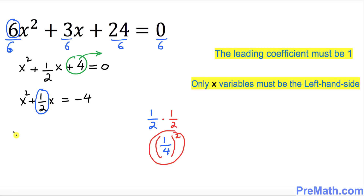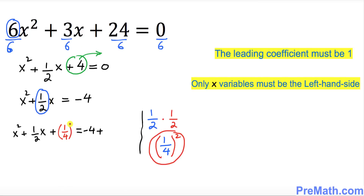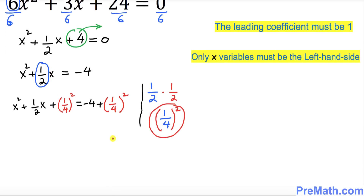So we can write: x squared plus 1 over 2x plus (1 over 4) squared equals negative 4 plus (1 over 4) squared. We are adding 1 over 4 squared on both sides of the equation.